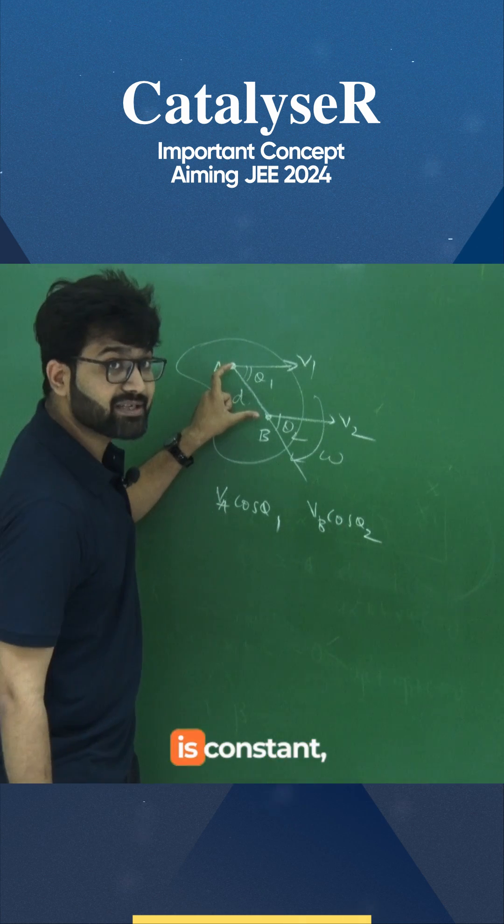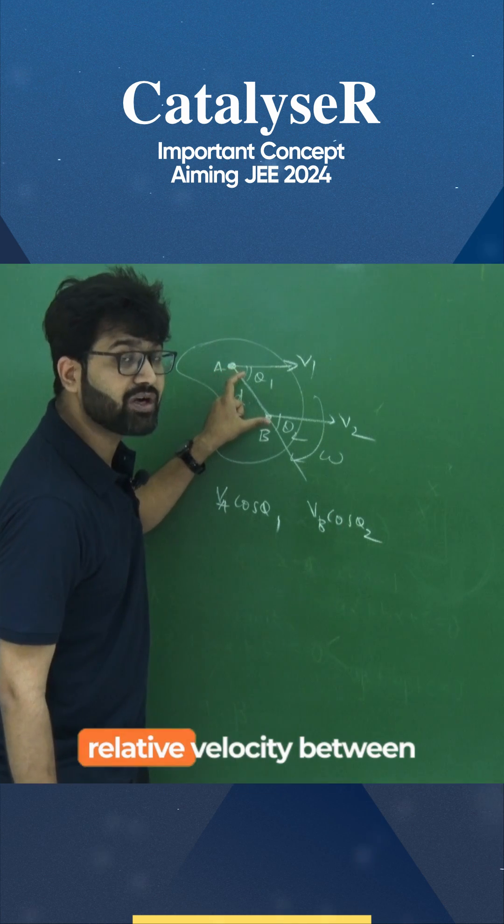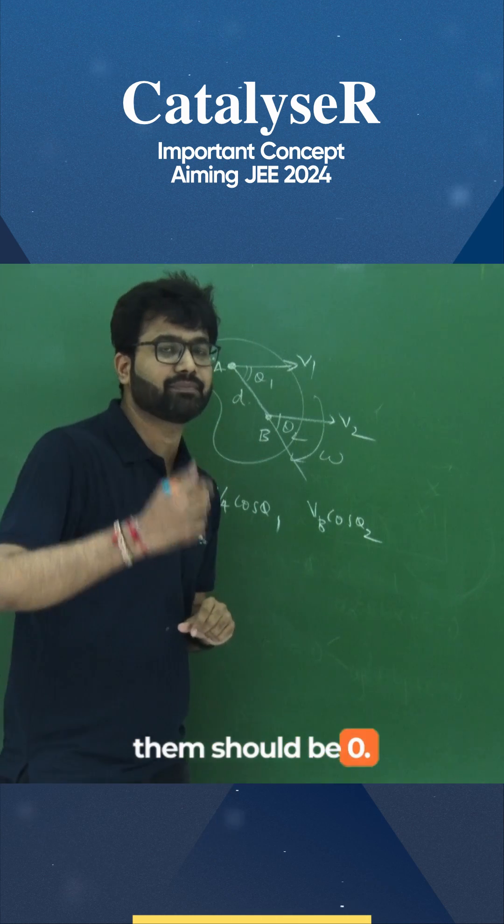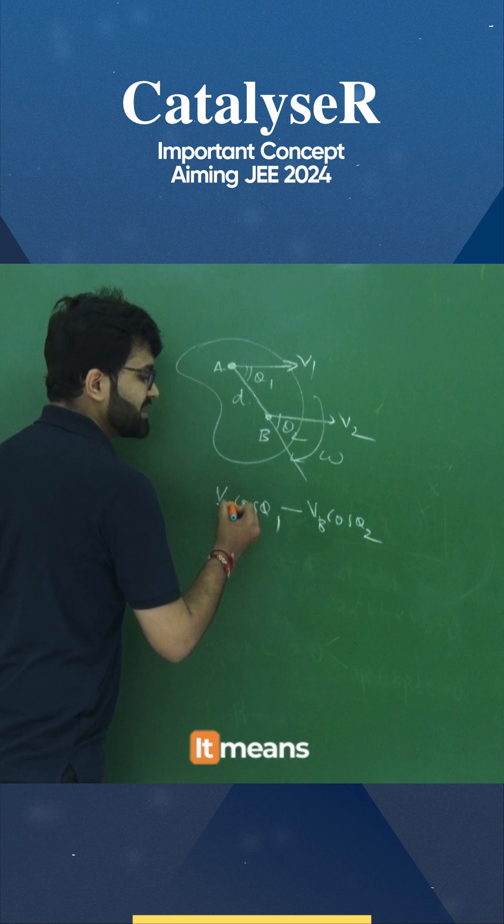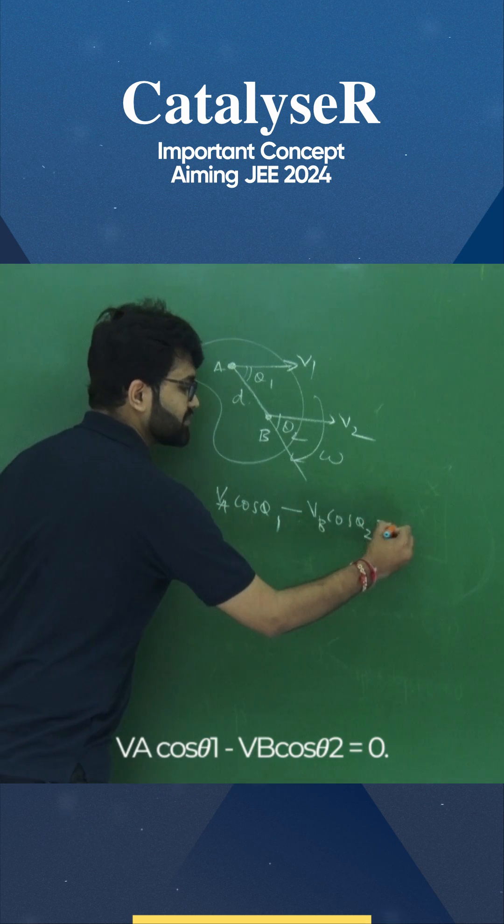If the distance between them is constant, it means the relative velocity between them should be 0. It means VA cos theta1 minus VB cos theta2 should be 0.